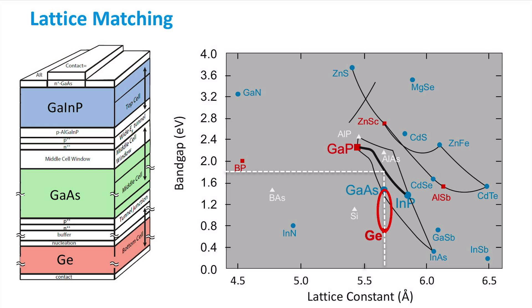This trade-off is between using an optimal bandgap to maximize the spectral utilization, and the optimal lattice constant to minimize the interface recombination caused by dangling bonds.